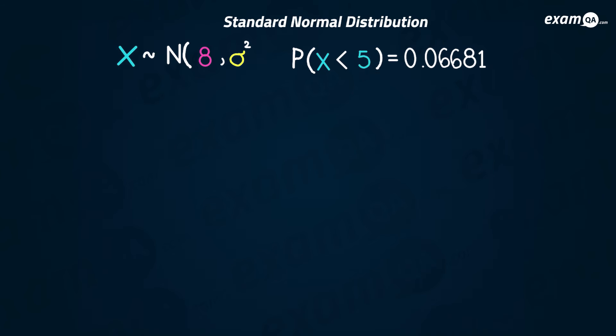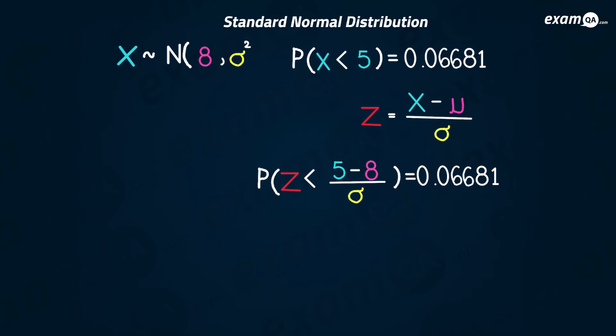Here's another question. Instead of not knowing mu, this time we don't know sigma — the standard deviation. Again, they've given us a piece of information. Let's do what we did in the last question and standardize it. Here's the standardizing formula again, and once you've standardized it you should get this.